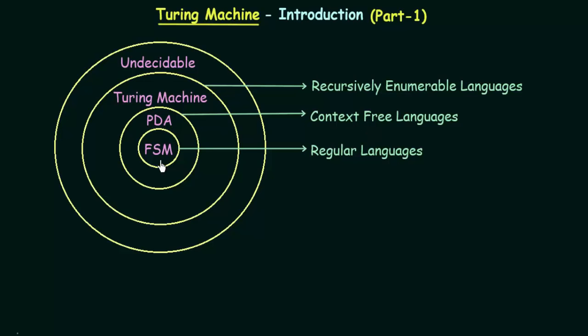We saw the limitations of finite state machines and we saw how its limitations were overcome by push down automata, because it is more powerful than finite state machines. And now as we move one step ahead, we are going to study about Turing machine which is more powerful than finite state machines and also more powerful than push down automata. The class of languages accepted by Turing machines is known as recursively enumerable languages, which we will be discussing in detail as we proceed further in this module.